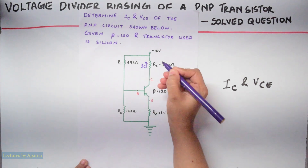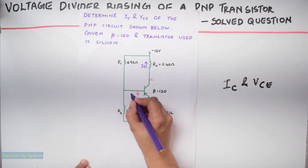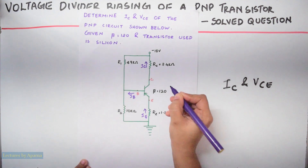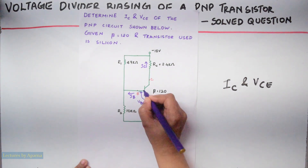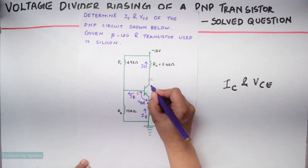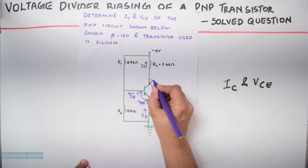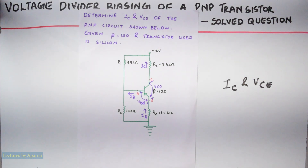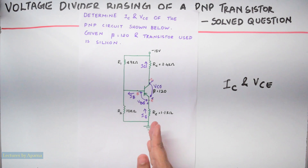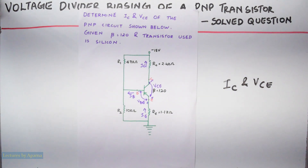This is IC, this is IE, this is IB, this is VBE, and this is VCE. The polarities here in the PNP transistor will be opposite to that of the NPN transistor.